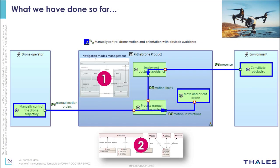A short recap: so far, we have done the simulation of the state machine. To do so, we first initialized the simulation model with the Simulink bridge from Capella. We also exported the data structure definition from Capella in order to specify the data types of the signals used in the simulation. In order to have a formal description of the state machine so we can execute it, we refined the initialized model a bit. With this executable model, we are able to simulate the state machine and verify it in a unit test.